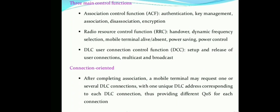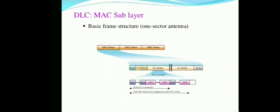There are three main control functions: ACF, RRC, and DCC. ACF handles authentication, key management, disassociation, and encryption. RRC (Radio Resource Control) handles handover, dynamic frequency selection, mobile terminal alive/absent states, power saving, and power control. DCC handles setup and release of user connections, multicast, and broadcast. This is connection-oriented: after association, a mobile terminal may request one or several DLC connections, each with a unique DLC address, providing different quality of service per connection.